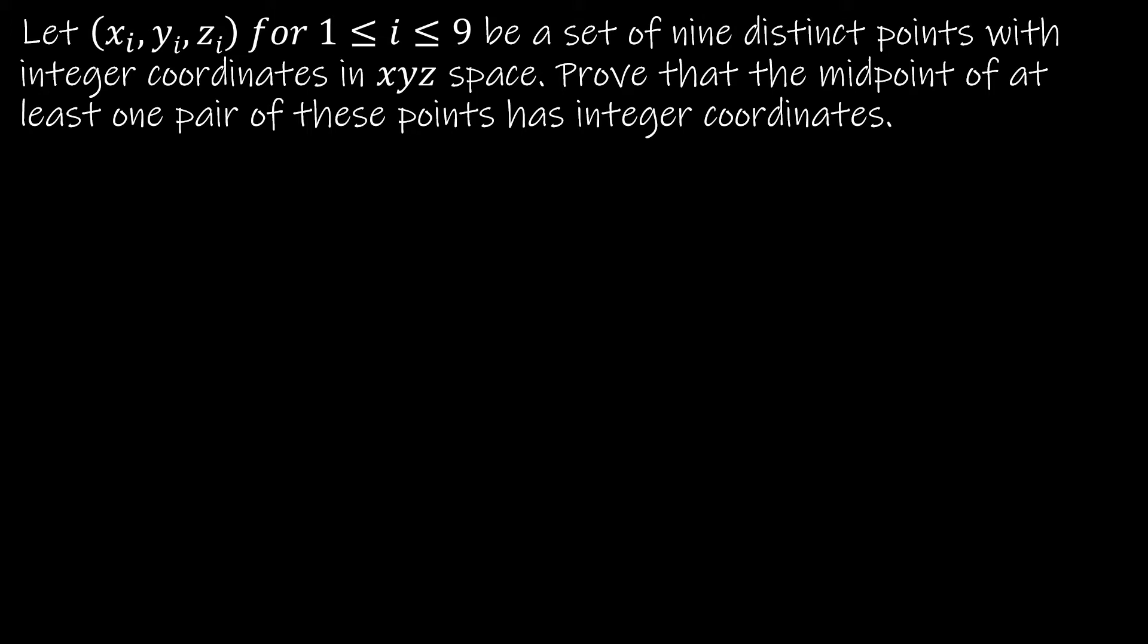For this example, for this one proof we're going to go through together, I've actually just recopied the same proof twice because I want to spend some time talking to you about all of the parts of this first before we jump into a proof. So the first thing is, do we understand how to read math? This says, let (x_i, y_i, z_i) for 1 ≤ i ≤ 9 be a set of nine distinct points with integer coordinates in xyz space.